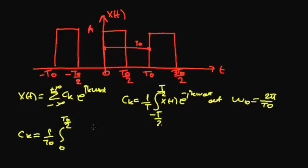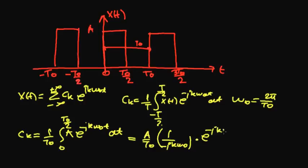As we can see, because the amplitude of the signal is A, so we have A multiplied by the exponential of minus jk omega 0t dt. Then we have A over T0, the integral of the exponential is 1 over minus jk omega 0 multiplied by the exponential of minus jk omega 0t in boundaries from 0 to T0 over 2.